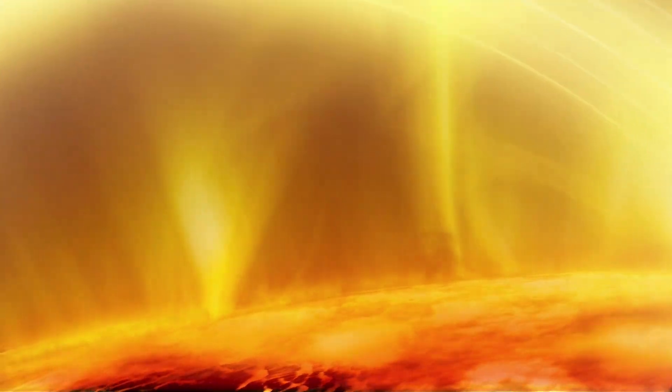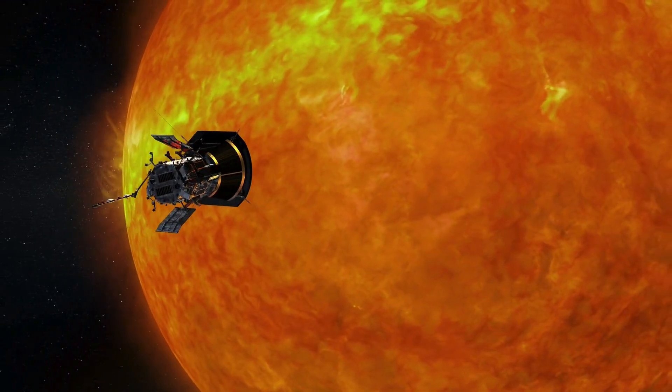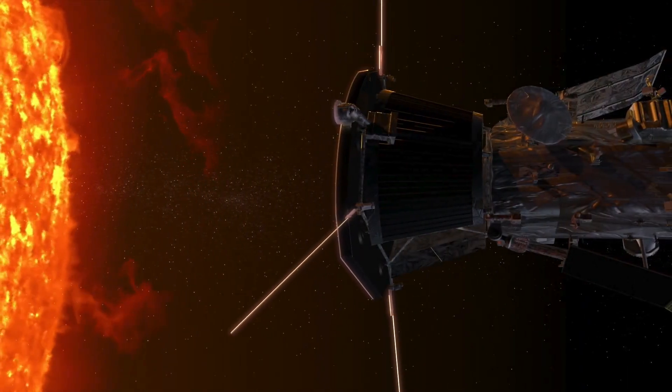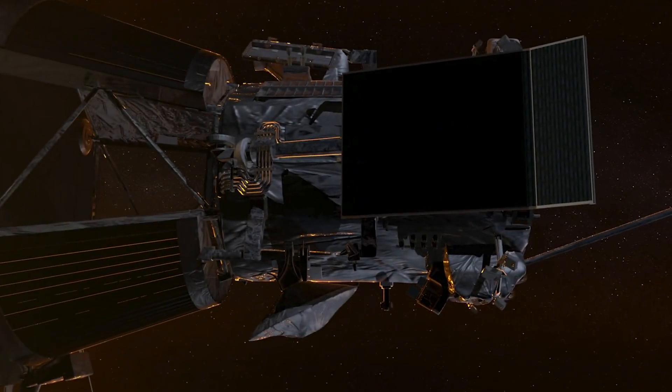And how do solar eruptions affect the very fabric of our solar system? Creating Parker was a feat of genius. Its revolutionary heat shield, known as the thermal protection system, allows it to endure temperatures up to 1,370 degrees. Inside, instruments remain cool enough to function, a technological masterpiece standing between survival and obliteration.